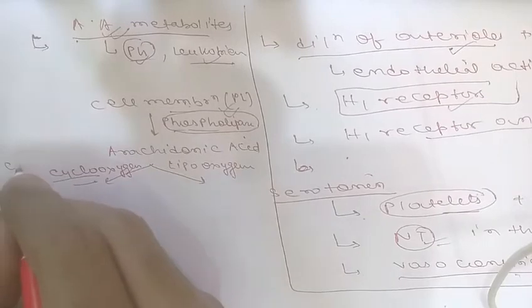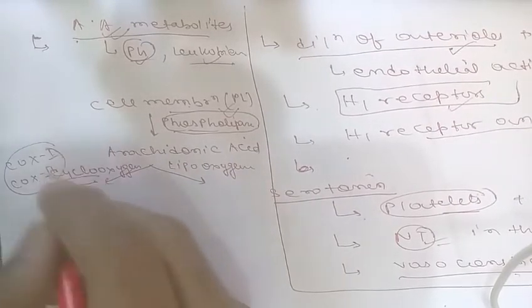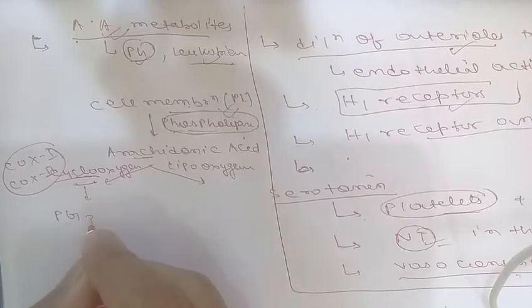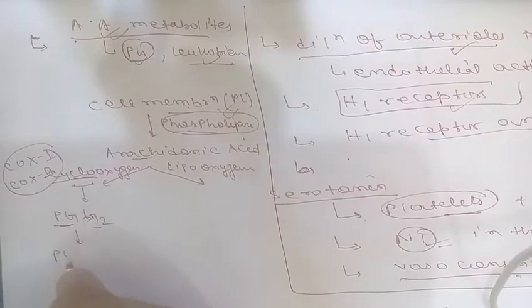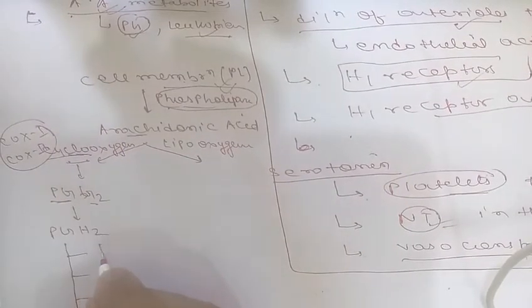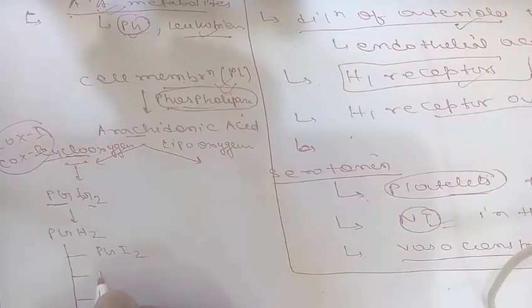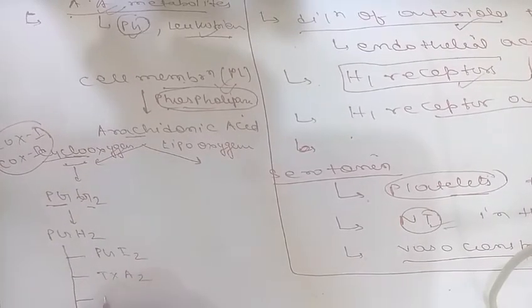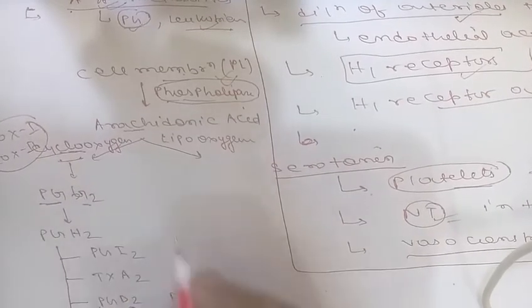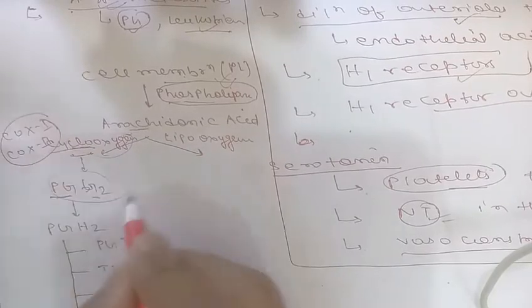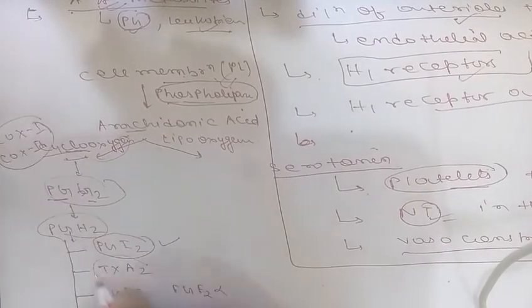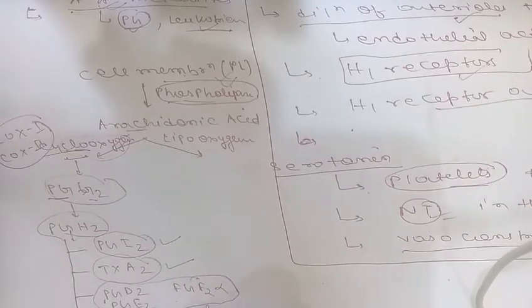There are two cyclooxygenase enzymes: COX-1 and COX-2. When cyclooxygenase acts on arachidonic acid, it leads to formation of PGG2, which is converted to PGH2. PGH2 then forms three types of products: PGI2 (prostacyclin), thromboxane A2 (TXA2), and the prostaglandins PGD2, PGE2, and PGF2α.